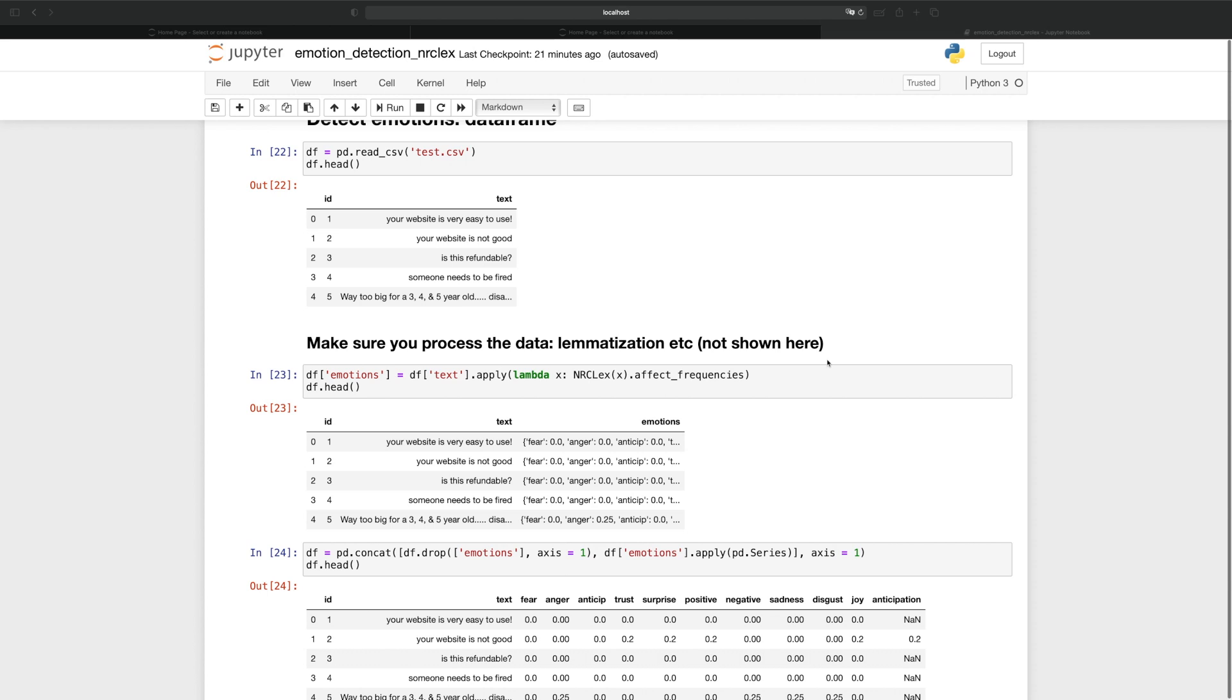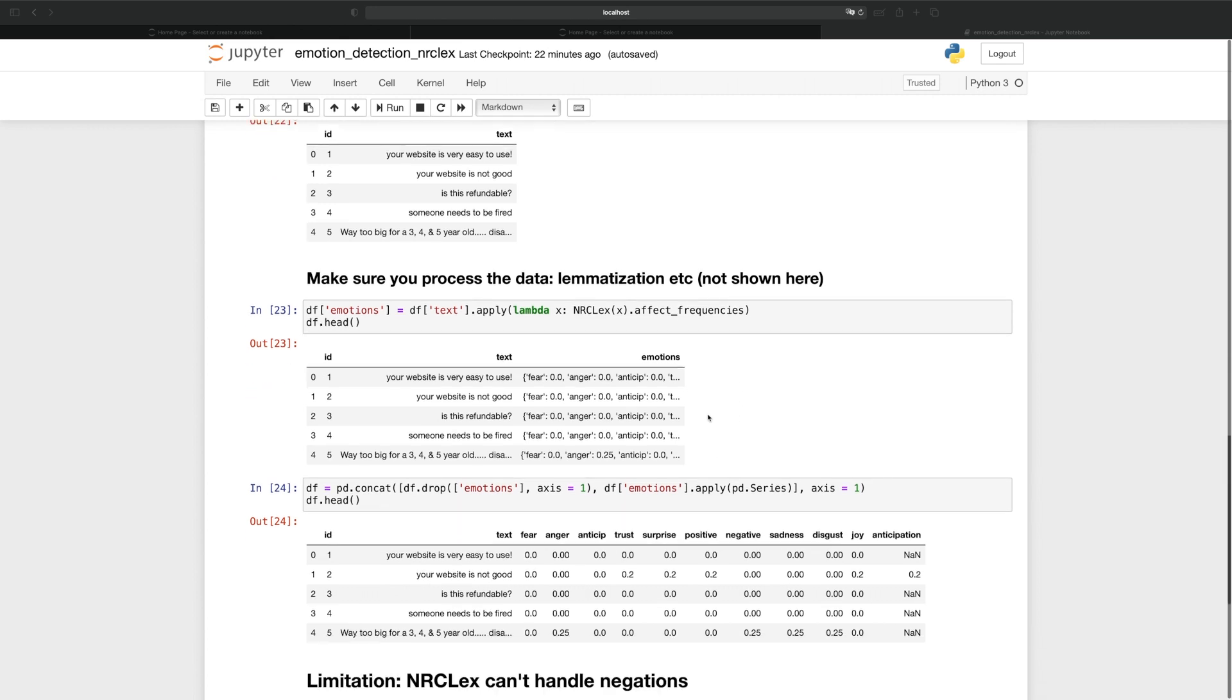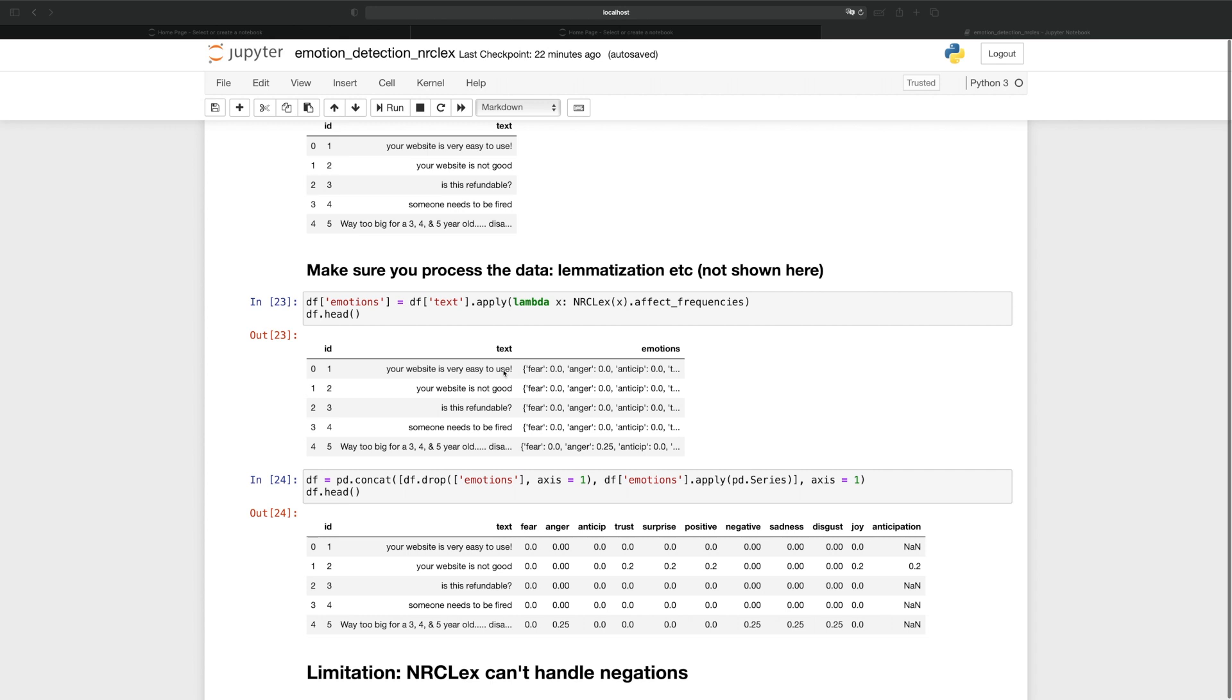Before you use NRC-Lex to detect emotions in text, make sure you process and clean the data. For example, you want to lemmatize the words, so that past tense becomes present tense and third person usage becomes first person. I am skipping data cleaning here, and I will show you the results directly. Here I am creating a new column called Emotion. And for each text, we are going to get the affect frequency. Lambda here is going to help us repeat this process for every single text.